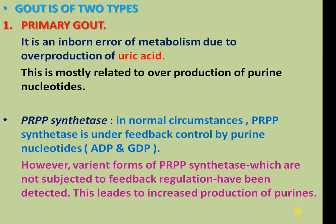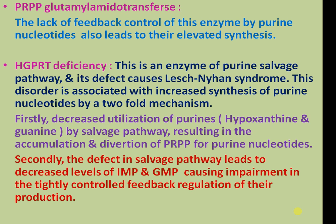This leads to increased production of purines. PRPP glutamyl transferase also shows lack of feedback control by nucleotides, leading to elevated levels. HGPRT deficiency is an enzyme of the purine salvage pathway. Its defect causes Lesch-Nyhan syndrome. These disorders increase the synthesis of purine nucleotides by a two-fold mechanism. Firstly, decreased utilization of purines, hypoxanthine and guanine, by the salvage pathway, resulting in accumulation and diversion of PRPP for de novo purine nucleotide synthesis.